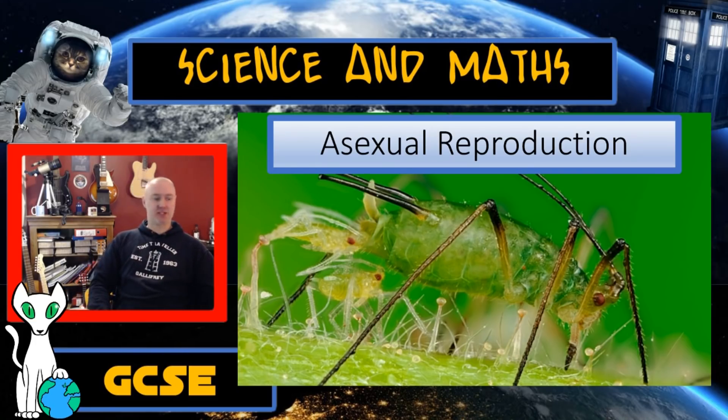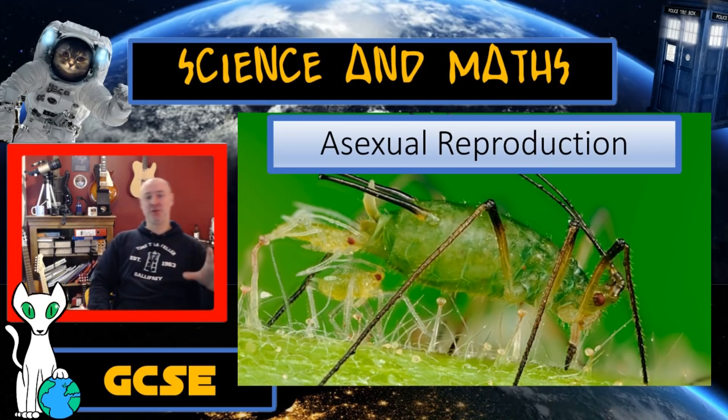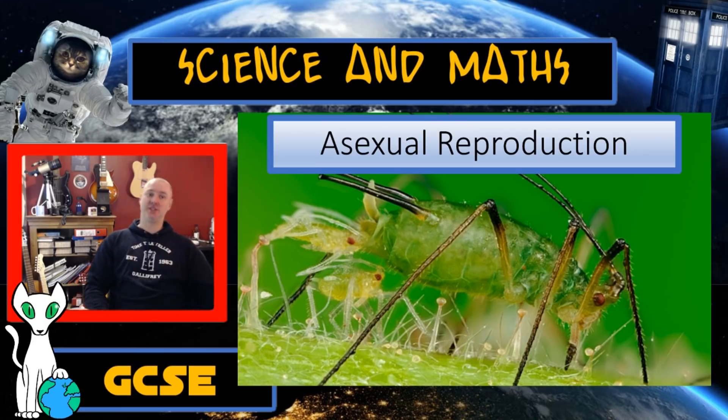So to recap, mitosis is not only used for growth, it is used for repair, and in some organisms it's used for asexual reproduction. And it causes the production of two genetically identical daughter cells from one parent cell. And that is it. Hope that helped.